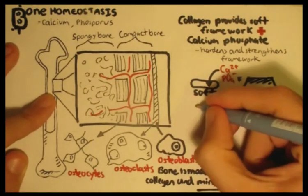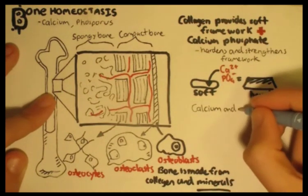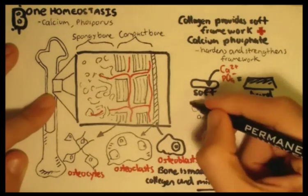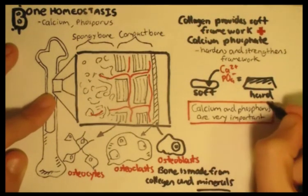So therefore, we can safely say that calcium and phosphorus are very important for the bone itself. And I'll do that by highlighting it, making a nice border around it.